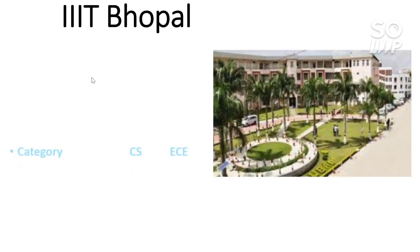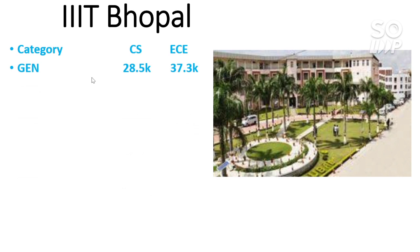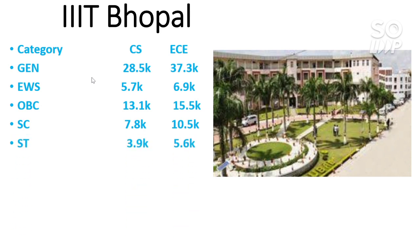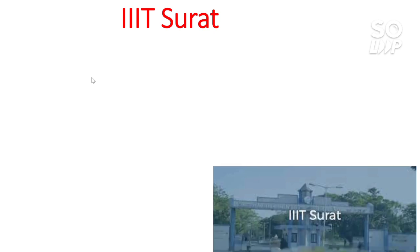Next is IIIT Bhopal. The cutoff for CS for General category is 28,500 and for EC 37,300. This is also an average IIIT — you can get it if you score around 97 to 97.5 percentile in the General category. For EWS — CS 5,700 and EC 6,900. For OBC — CS 13,100 and EC 15,500. For SC — CS 7,800 and EC 10,500. For ST — CS 3,900 and EC 5,600.